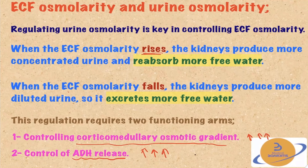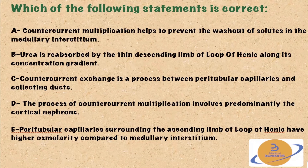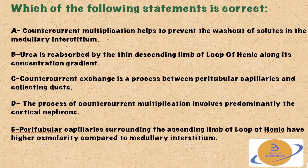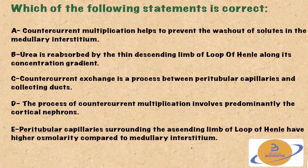Returning to the first slide: if extracellular fluid osmolarity rises, the person is dehydrated and we need to preserve more water. The corticomedullary osmotic gradient rises producing a more concentrated medulla, and ADH release increases providing more aquaporin channels — resulting in a concentrated urine. Conversely, if extracellular fluid osmolarity falls, the body has excess water. The corticomedullary gradient goes down, ADH release decreases, and we excrete more water in the urine. Are you now able to answer the question shown at the beginning of the video?